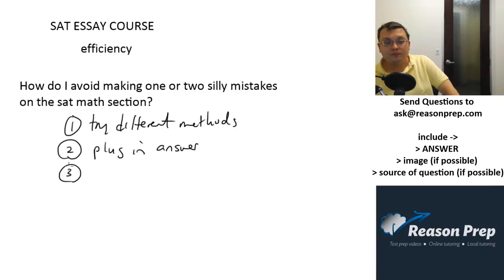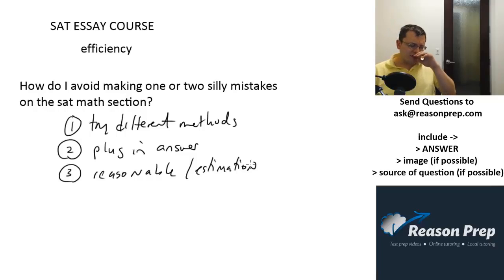Another thing would be what's reasonable and what's not, or estimation. This really helps a lot on percent questions. So for example, if you're trying to get the percent of a number and you end up with a number that's bigger than the original, that doesn't make sense because a percent, if it's like 15%, should be smaller. It should get you a number that's smaller than the original. So knowing what answers should be reasonable, estimating around what the answer should be based on the numbers in the problem. If you get something wildly different from what you expect, that's perhaps a sign that you made a mistake. So that would be three things I would say.